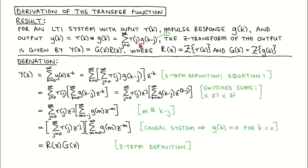We want to prove that the Z-transform of the output signal is the product of the Z-transform of the impulse response and the Z-transform of the input signal.